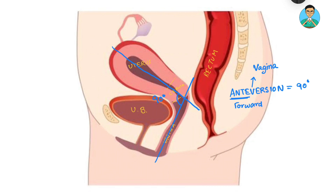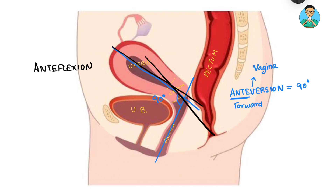The second important angle is known as anteflexion. Anteflexion is the angle of the long axis of uterus with the long axis of cervix — this angle. And this angle is approximately 120 degrees. So anteflexion angle is 120 degrees. Anteflexion is the angle of uterus and cervix.